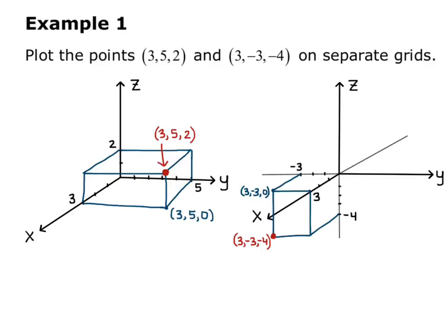Now, I could have accomplished the same thing by just making myself a little path, where I go out 3 in the x-direction, negative 3 in the y-direction, so left 3, and then from there, down 4. So that will accomplish the same thing. That's how we plot points in three dimensions in the Cartesian coordinate system.